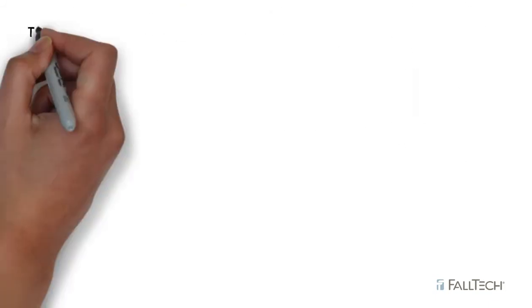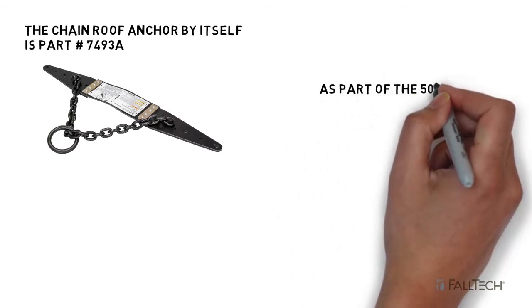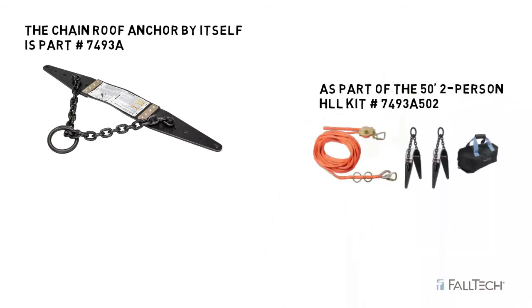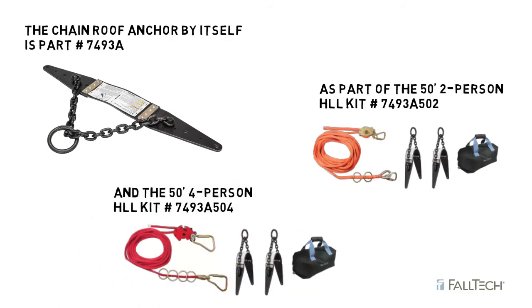The Chain Roof Anchor by itself is part number 7493A. As for the 50 foot Horizontal Lifeline systems available, the 2 person Horizontal Lifeline Kit is part number 7493A502. The 4 person Horizontal Lifeline Kit is part number 7493A504.